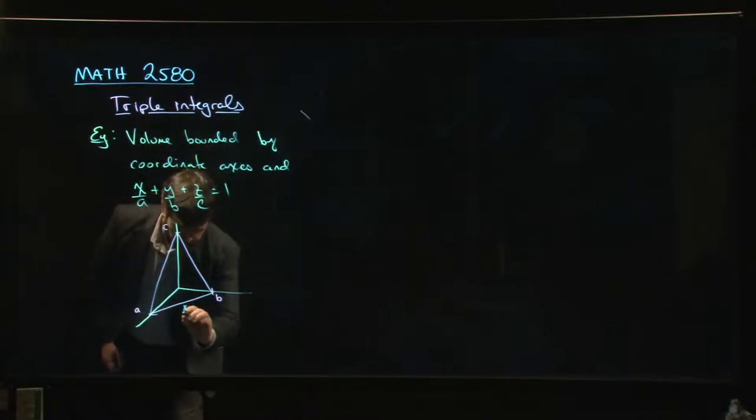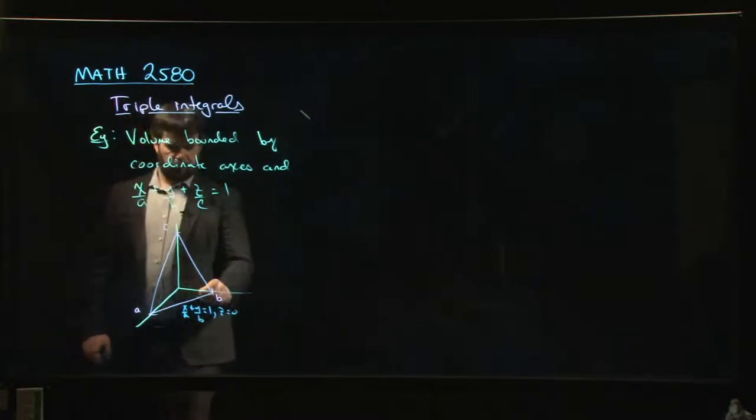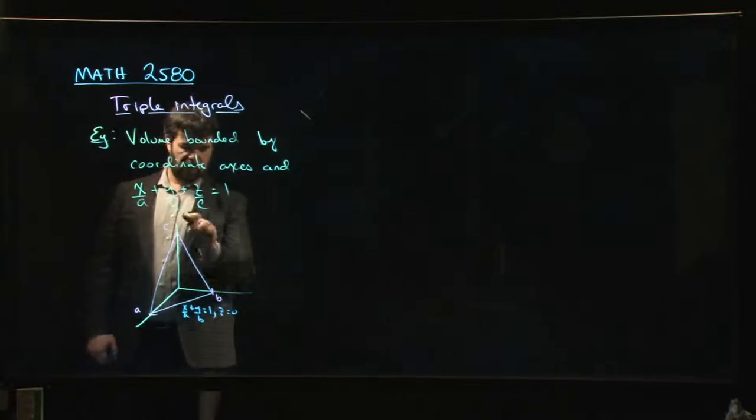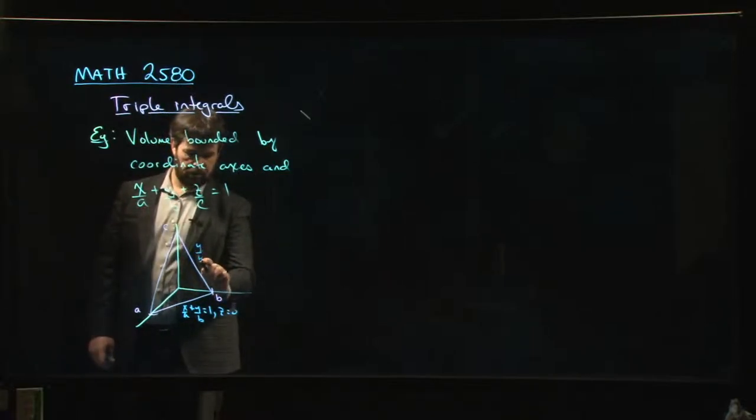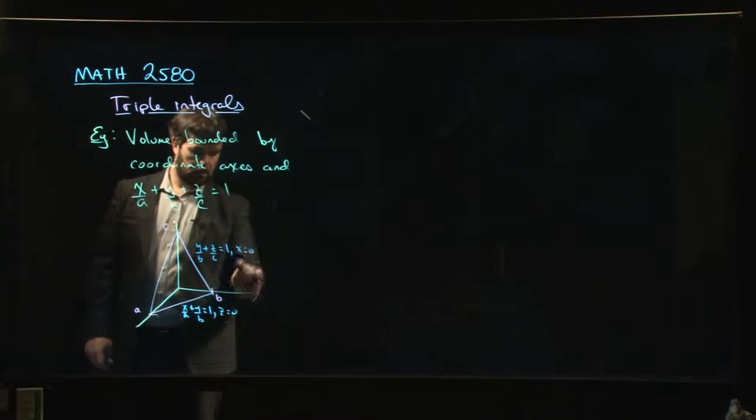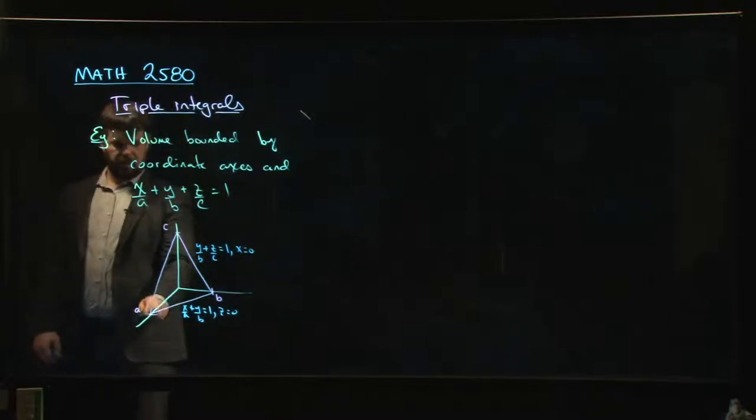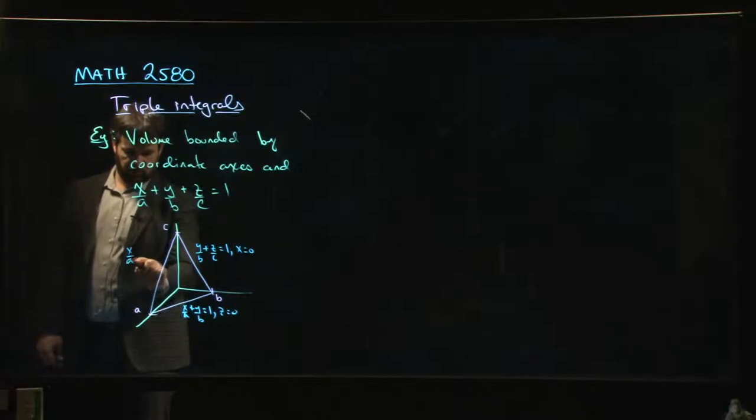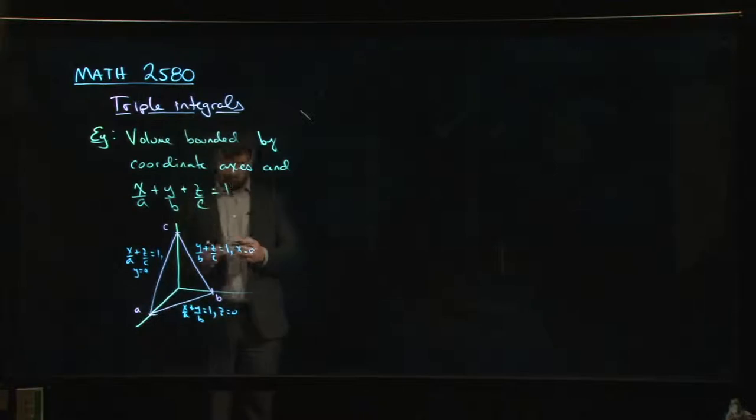And of course, by setting one of the variables equal to zero, we can work out the equations of these three edges. So if z is zero, then we have x/a + y/b = 1 on that side. Here, this is the y,z plane. That's when x equals zero. So y/b + z/c = 1 and x equals zero. This side over here is in the x,z plane. That's when y equals zero. So we have x/a + z/c = 1 and y equals zero.